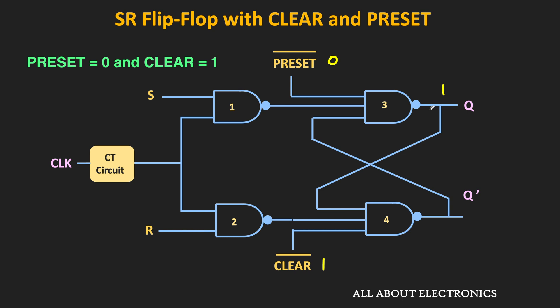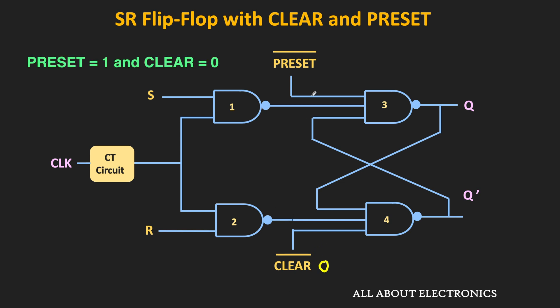So Q will become 1, but at the same time Q' should also become 0. Once Q becomes 1, that same 1 will also appear at the fourth NAND gate, and the clear input is also equal to 1. That means two of the three inputs of the fourth NAND gate are already 1. But to get Q' as 0, all three inputs of the fourth NAND gate must be 1. Whether this third input is 1 depends on the output of the second NAND gate — in other words, on the value of R and the clock signal. So the asynchronous input is not actually overriding the other inputs as required. We need to ensure the output of the second NAND gate is also equal to 1 when the preset input is 0. The same issue happens when the clear input is 0 and the preset input is 1.